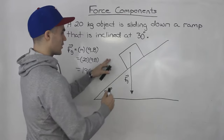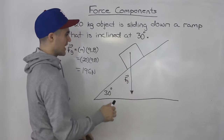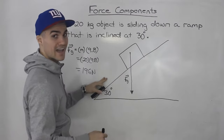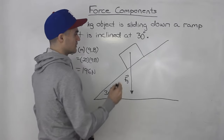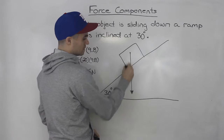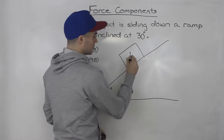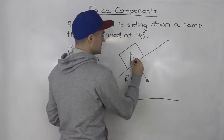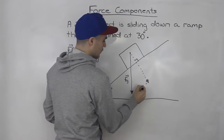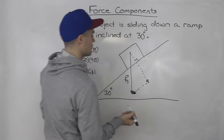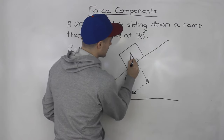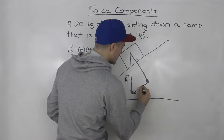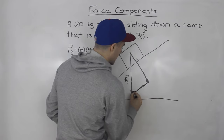Notice that this object is on a ramp and we have this force of gravity pointing straight down — it's a bit unusual to have a force pointing straight down while the object is sliding down at an angle. So what is usually done is you break down this force of gravity into components: a force that is perpendicular to the ramp and then a force that is parallel to the ramp.